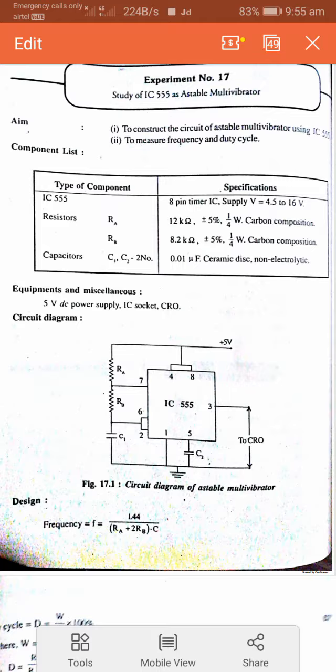Component list: IC555 is an 8-pin timer IC requiring supply voltage of 4.5V to 16V. Resistors required: Ra = 12 kΩ, 1/4W carbon composition; Rb = 8.2 kΩ, 1/4W carbon composition.